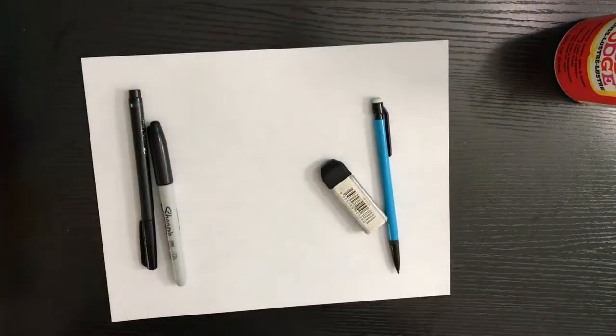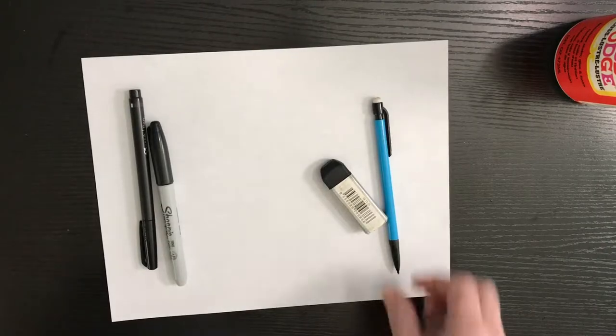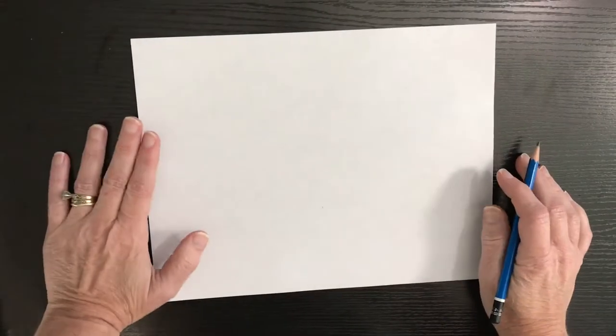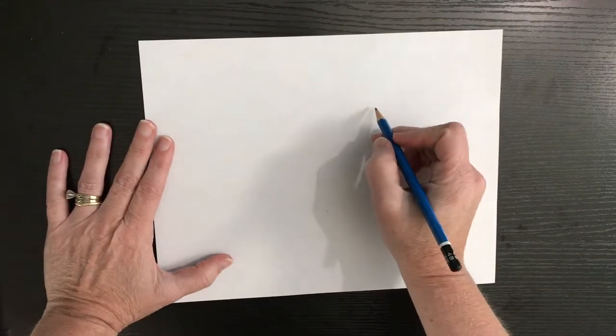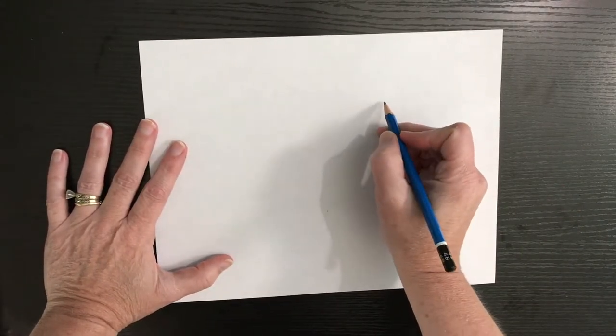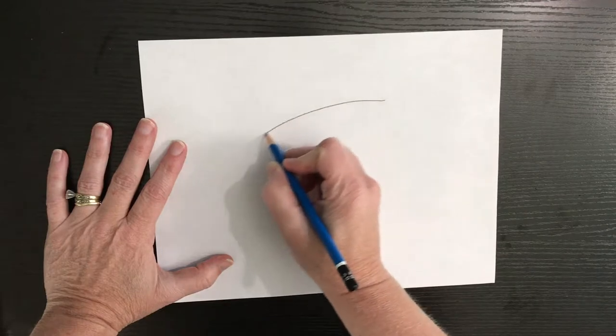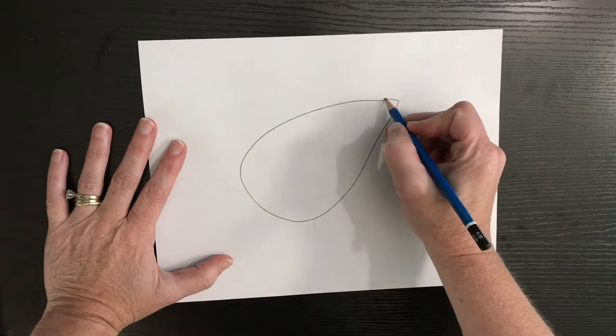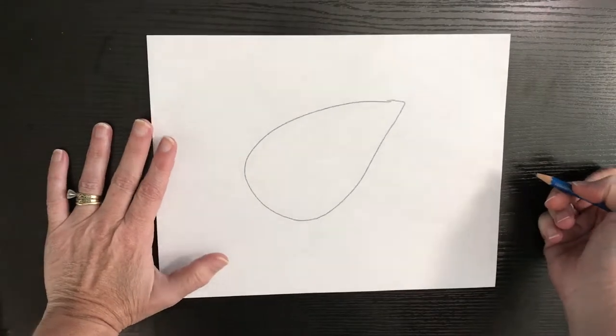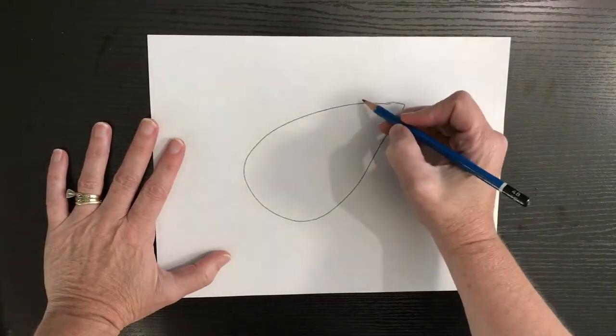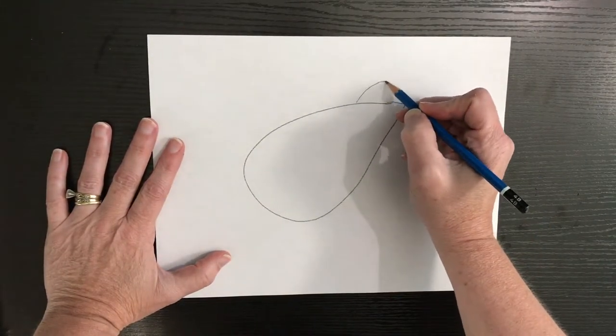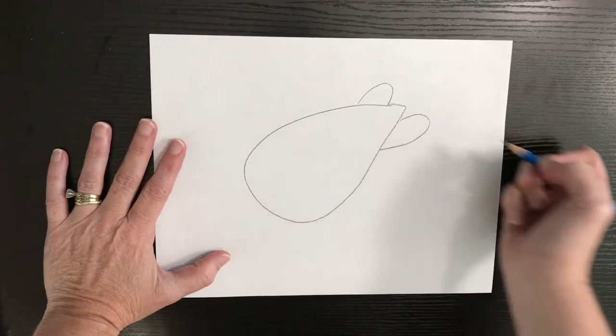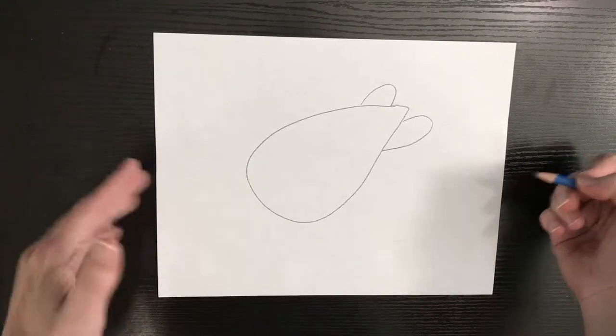We're going to start by drawing the turtle. We're going to start our Hawksbill turtle by drawing an oval that ends in a point. That point is where his tail, kind of the tail of his shell, is. Once we do that we're going to add his back legs and they're just kind of like U's that come into his shell.